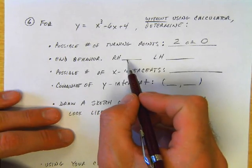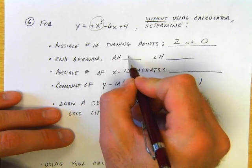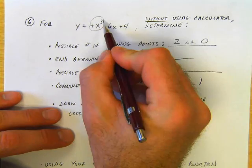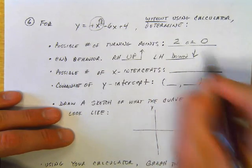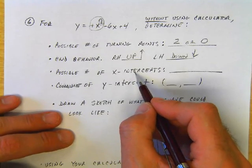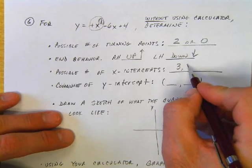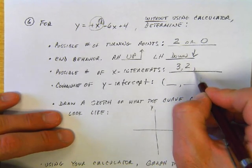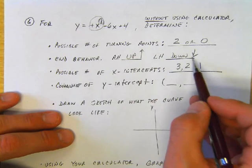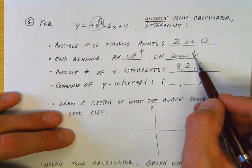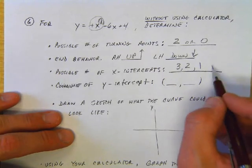The possible number of x-intercepts could be 3, 2, or 1. Now, if one end goes up and the other goes down, there has to be at least 1, so 0 is not an answer for a possible number.